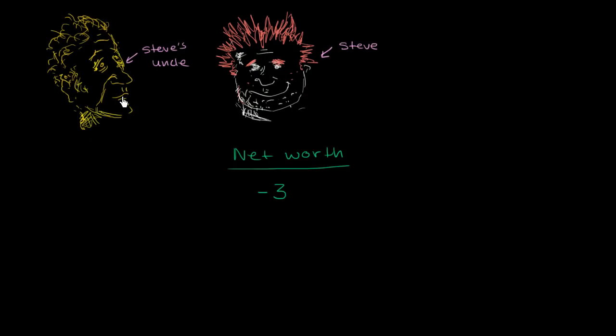This is Steve, and this is Steve's uncle. And Steve is in a bit of a bind. Not only does he not have any money, but he also owes Michael, who is not depicted here, he owes Michael $3.